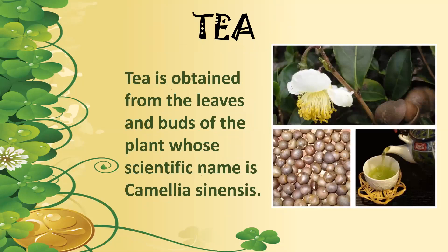Where do we get our tea from? We get tea from tea leaves from tea gardens and also from the buds of the plant whose scientific name is Camellia sinensis. The buds of this plant produce the material which, when crushed, is converted into different forms of tea. So we get tea from two different parts: the tea leaves and the tea buds.